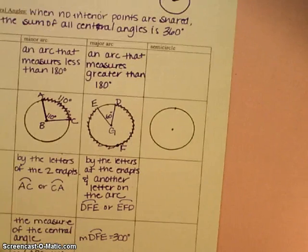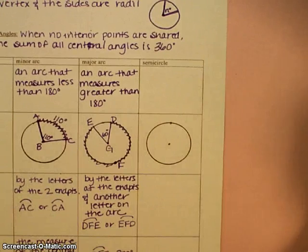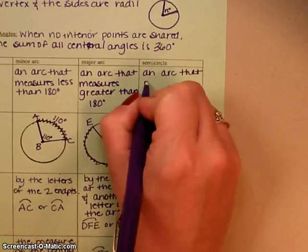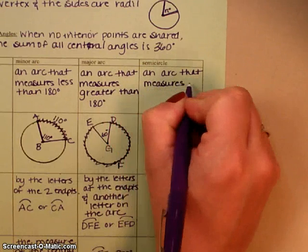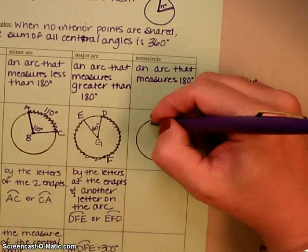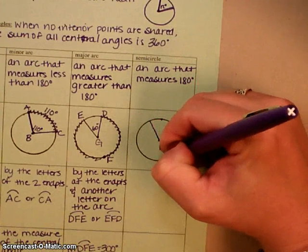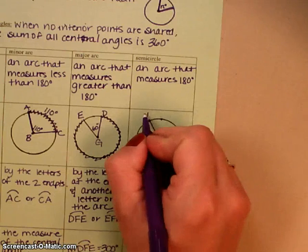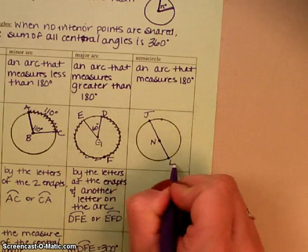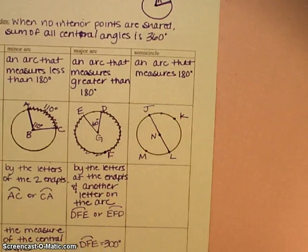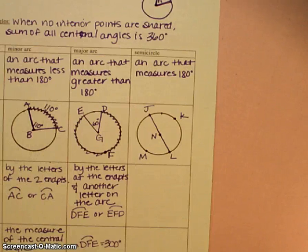The third type of arc is a semicircle. You guys kind of already know this one. A semicircle is an arc that measures 180 degrees. So exactly 180 degrees. In other words, it's a half of a circle. It's a semicircle. So if I were to draw this in here, a semicircle would be like, it would definitely involve a diameter of some kind. Let me put some letters on here. J-N-L. I'm going to put a K here, and I'm going to put an M here.